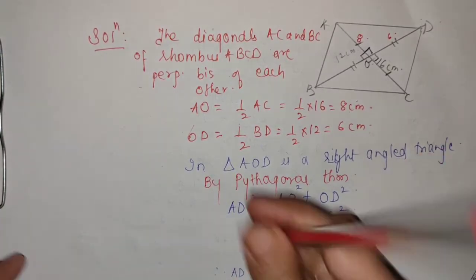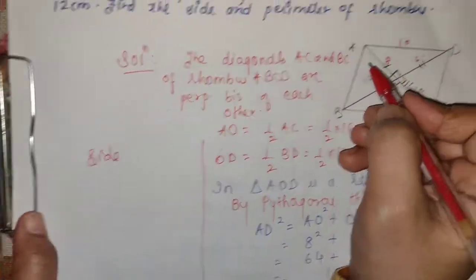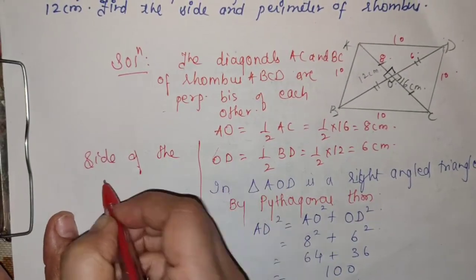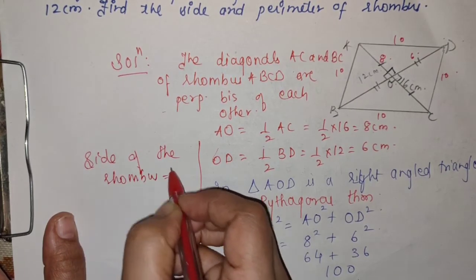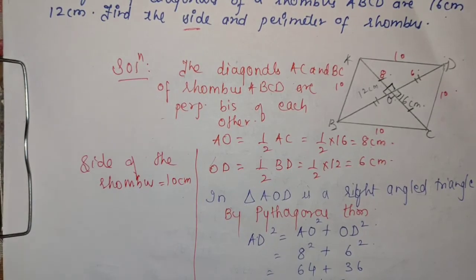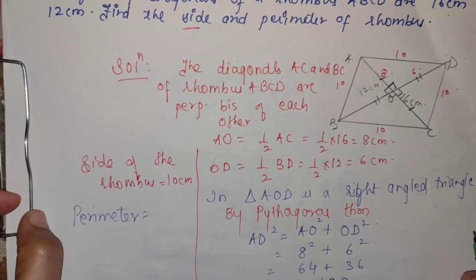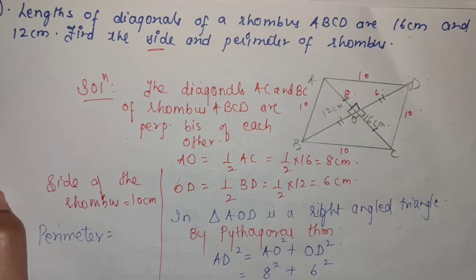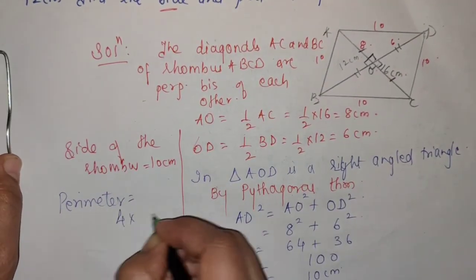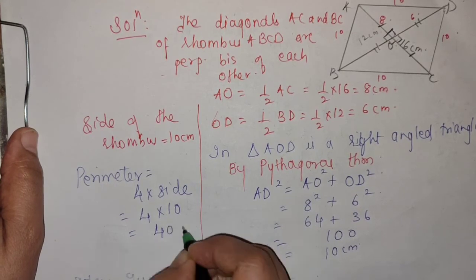Side of the rhombus हमको 10 मिला, and we know all sides are equal. Side of the rhombus is 10 centimeter. Perimeter means sum of all the sides — अगर side same है तो 4 × side भी लिख सकते हो. Perimeter = 4 × 10 = 40 centimeter. Perimeter का unit centimeter होता है और area का unit square centimeter होता है।